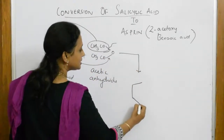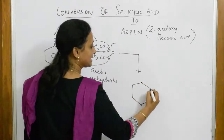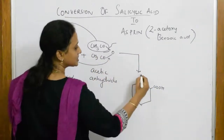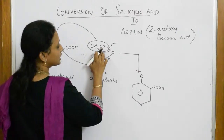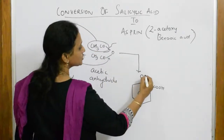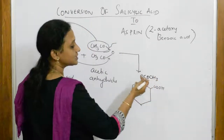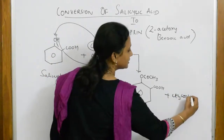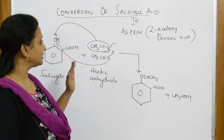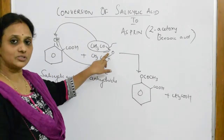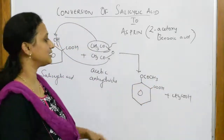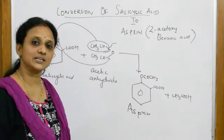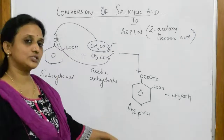Your -COOH is still existing there — that is why it is called benzoic acid. Your oxygen is still there, and what is attached is -O-COCH3, which is the acetoxy group. Acetic acid comes out as a byproduct. So simply: take salicylic acid, add acetic anhydride, cleave the bond — one part comes out with acetic acid, and the other is your aspirin, 2-acetoxy benzoic acid. This is the conversion of salicylic acid to aspirin.